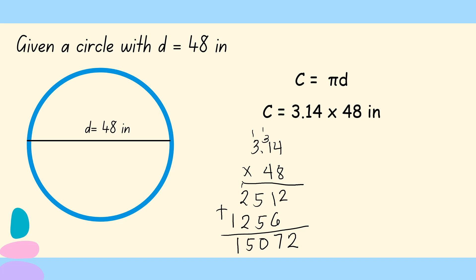So apply the rule of multiplication of decimals since there's a decimal point. Our given has a decimal. So 1, 2, move it going to the right. Same answer going to the left. 1, 2. So the circumference with diameter of 48 inches is equivalent to 150.72 inches. Don't forget to write the unit. Without the unit, it's wrong.